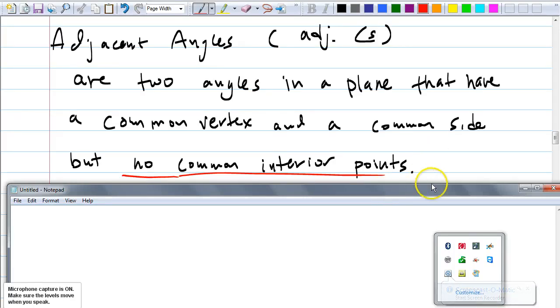Okay, so we talked about adjacent angles yesterday and let me see whether we really got this. First of all, the definition says adjacent angles are two angles in a plane that have a common vertex and a common side, but no common interior points, right?